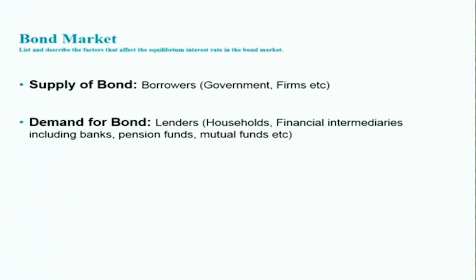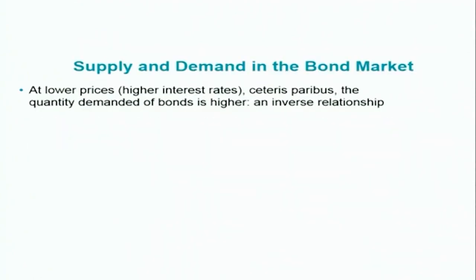Quick overview of what we discussed in the previous class. In the bond market we have seen that there are supplies of bonds and demand for bonds. About the supply of bonds, they are the borrowers of funds in the loanable fund market and it mostly consists of government and firms. About the demand for bonds, they are the lenders of funds in the market. It includes households, financial intermediaries including banks, pension funds, mutual funds, etc.